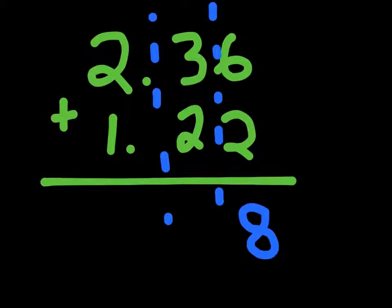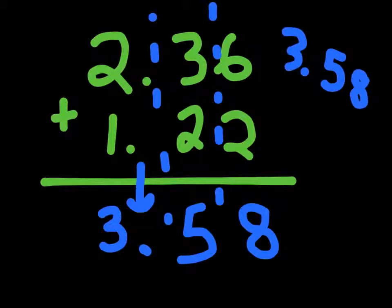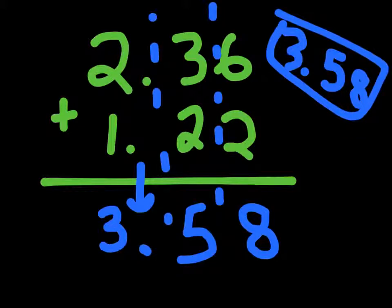3 plus 2 is 5, and then 2 plus 1 is 3. And then we have to remember that we have to bring down the decimal point. So, our answer to this becomes 3.58. That's it. 3.58. Let's do a few more problems like these.